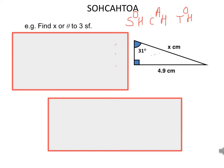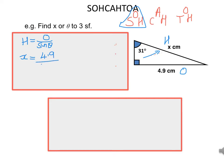In example two, the other angle is 31 degrees. 4.9 is opposite the 31 degrees, so we label that O, and x is opposite the right angle, so we call that H. The ratio that uses O and H is our sine ratio. Since x is our H, covering up the hypotenuse in the formula gives: hypotenuse equals opposite over sin of the angle theta. So x equals 4.9 divided by sin 31, giving a side length of 9.51 centimetres to three significant figures.